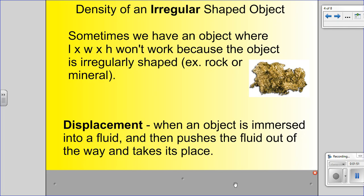Displacement is when an object is immersed into a fluid — that fluid is typically water. Immersed means it has to go all the way underneath the water; no part of the object can be sticking up above the water. The object pushes the fluid that was once there out of the way, and that object now takes its place. That's going to make more sense when you see the picture in just a second.